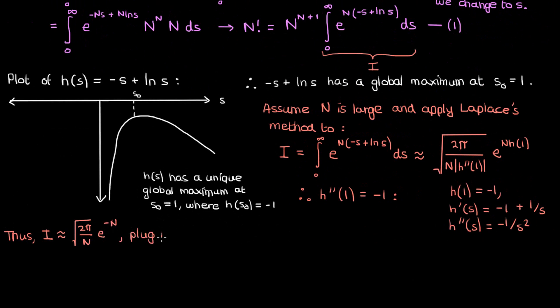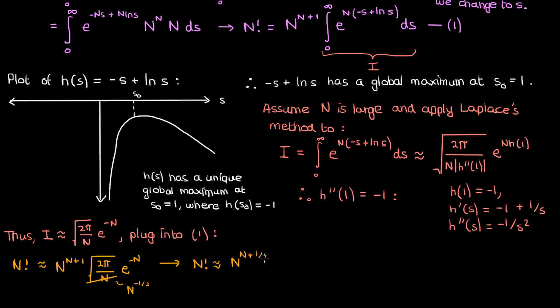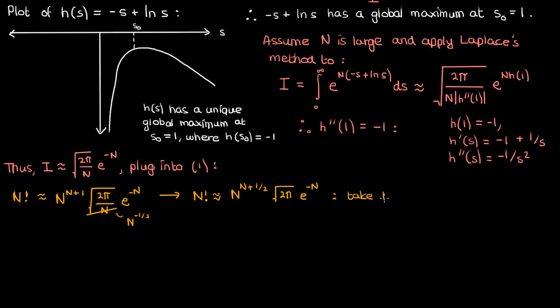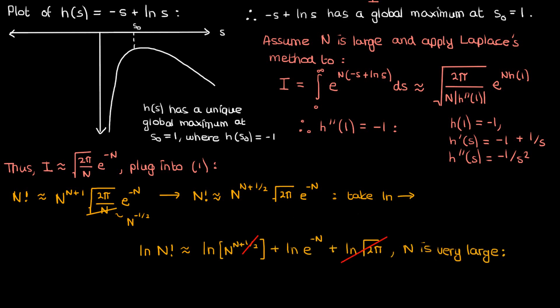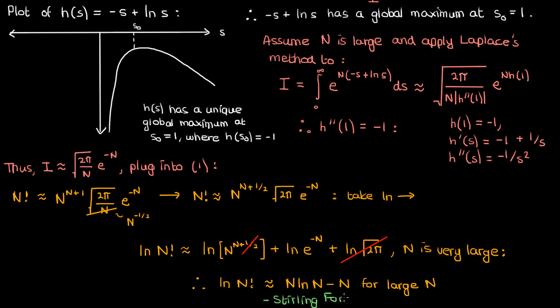Now we'll plug this back into equation 1 for our factorial. The capital N in the square root is just N to the power of negative one half, so combining N to the negative one half with N to the power of capital N plus 1 gives us our simplified expression. Finally, if we want to get the Stirling formula, we take the natural logarithm of this expression. Because capital N is very large, we can ignore the natural log of the square root of 2π and we can ignore the one half added to capital N. When we ignore these terms, we find that the natural log of N factorial is approximately equal to N times ln N minus N for large N — which is exactly Stirling's formula for the natural log of N factorial.